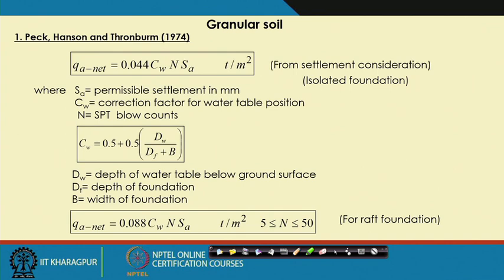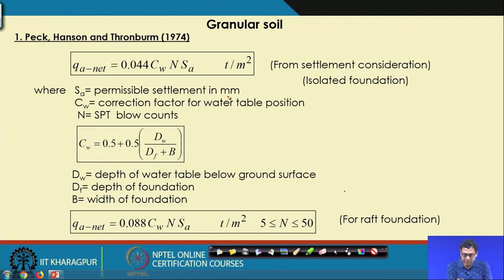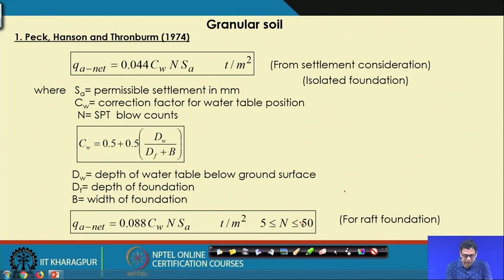The first expression for net allowable bearing capacity is: 0.44 × Cw × Sa, where Cw is the correction factor due to the water table and Sa is the permissible settlement. Remember, if you use this expression the result will be in tons per meter square. For a raft foundation, the expression is 0.88 × Cw × N × Sa, applicable when the N value is within the given limit.